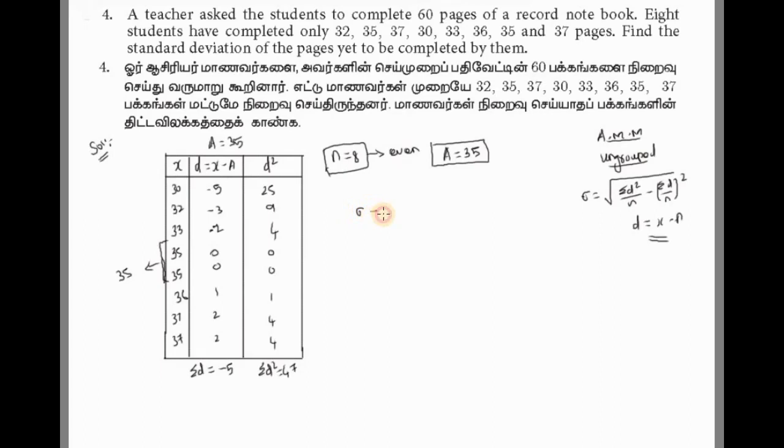Now we have all values, so substitute into the formula. Sigma equals square root of summation of d square divided by n. Summation of d square is 47, divided by n value which is 8, minus summation of d by n the whole square. Summation of d is minus 5, divided by 8, the whole square.